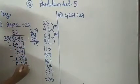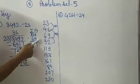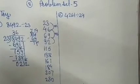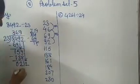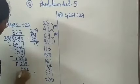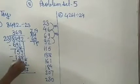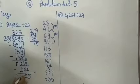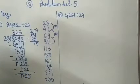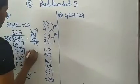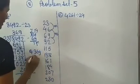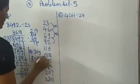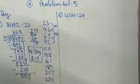Take those two down. In the table of 23, is 212 there? No. We want the number smaller than 212 — which number is it? 207. So 9 times 23 is 207. Now subtract: 2 minus 7 — no. So 12 minus 7 is 5, and here 0. So 0 minus 0 is 0, 2 minus 2 is 0. The quotient is 369 and the remainder is 5. So that is our final answer. I hope you understand.